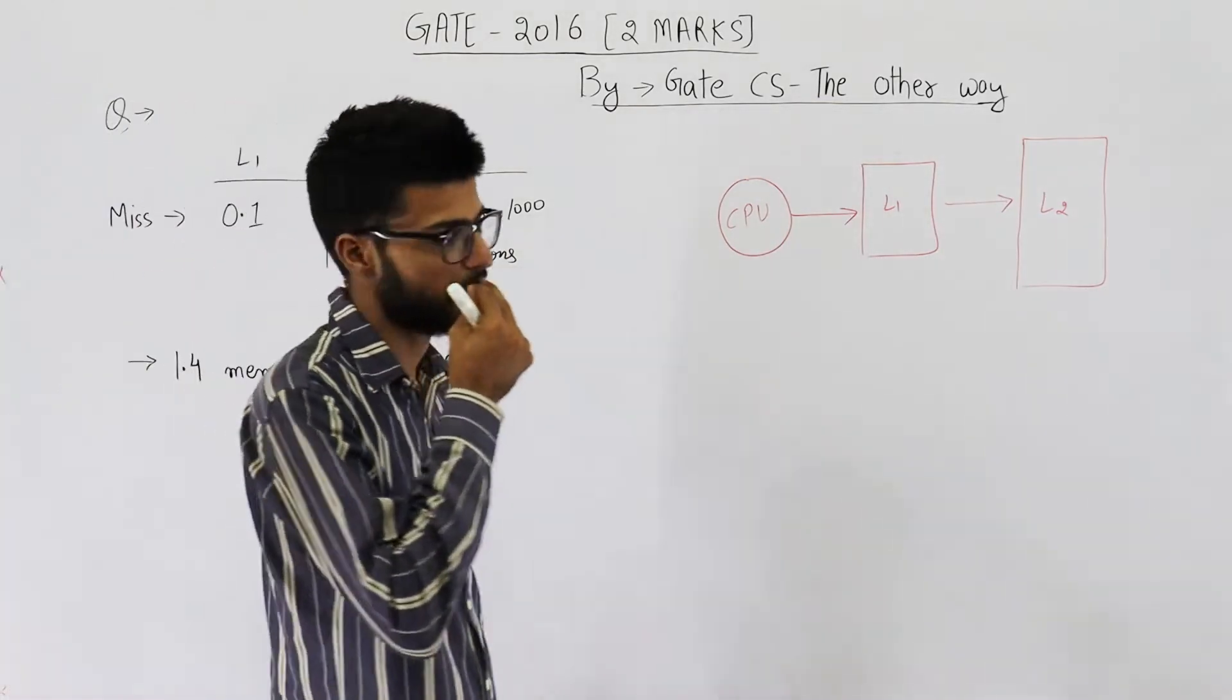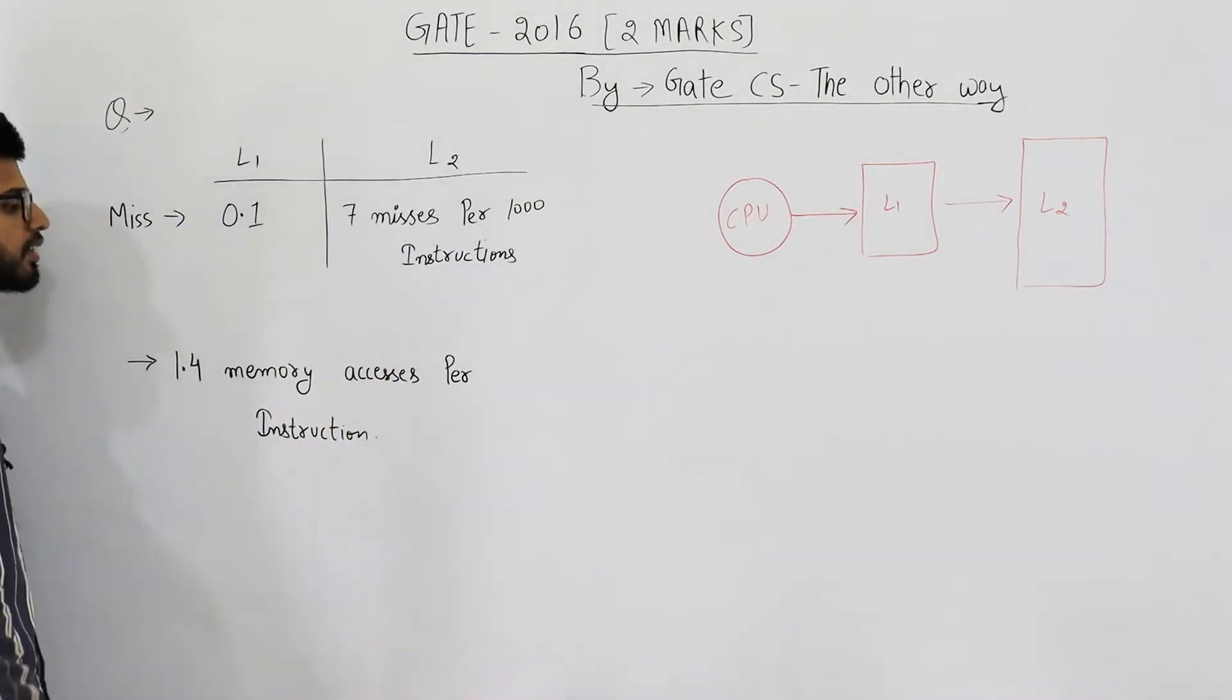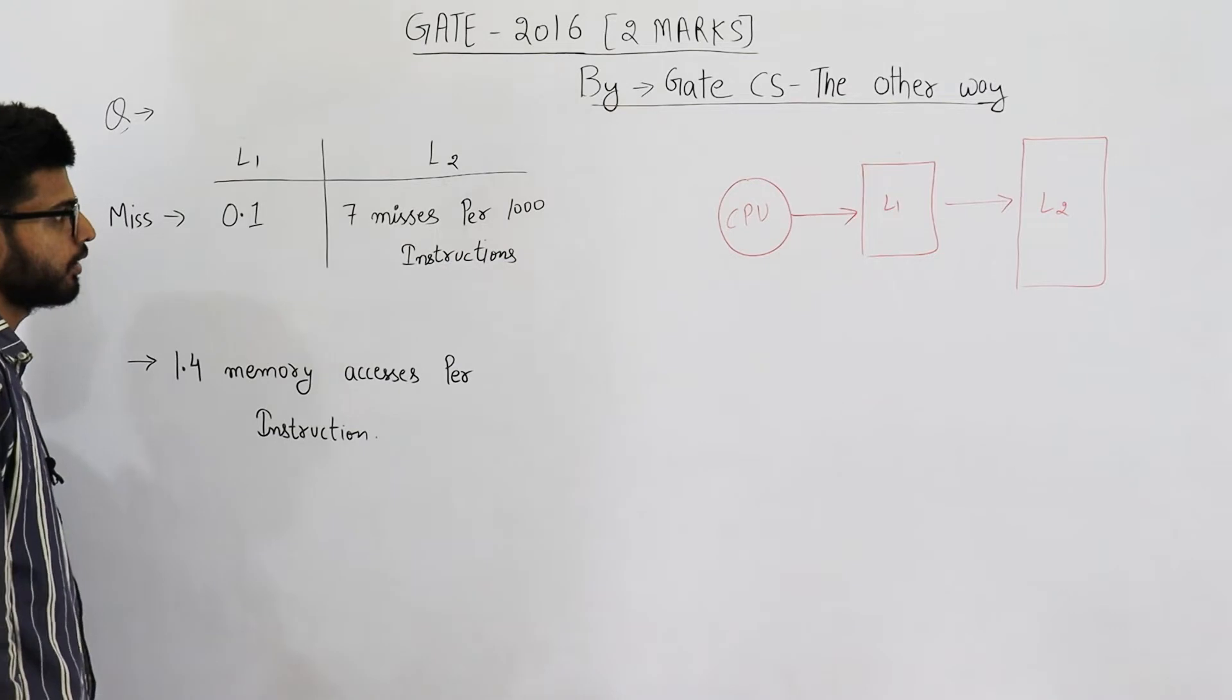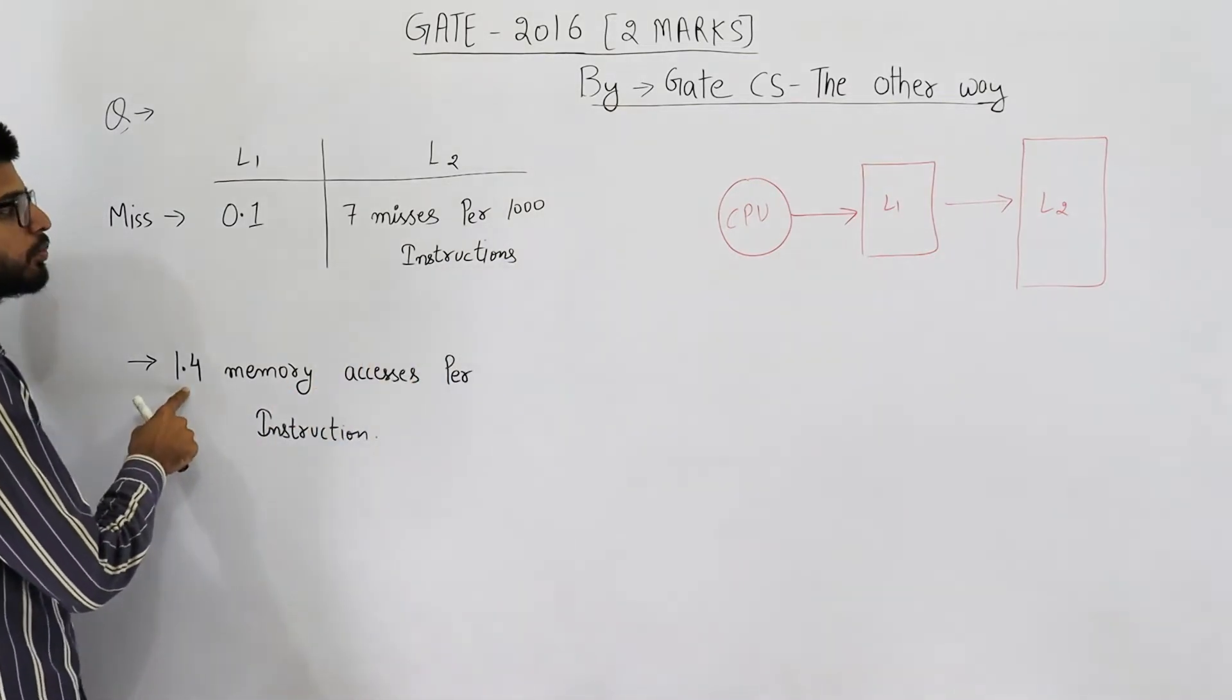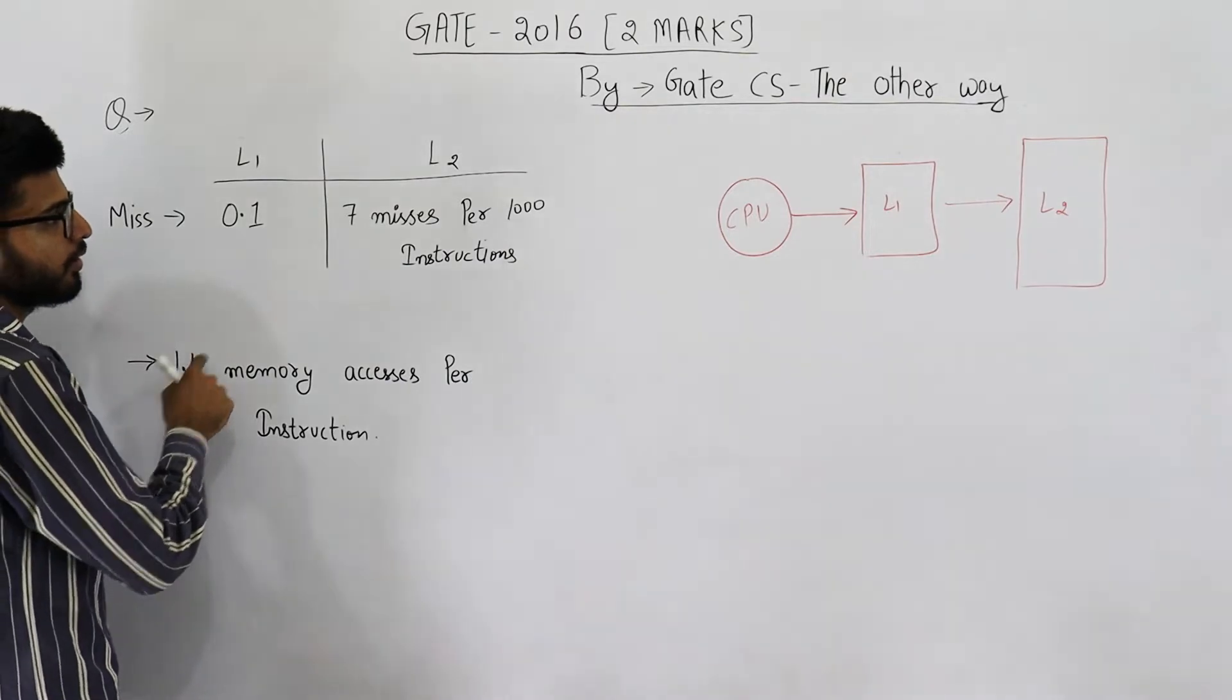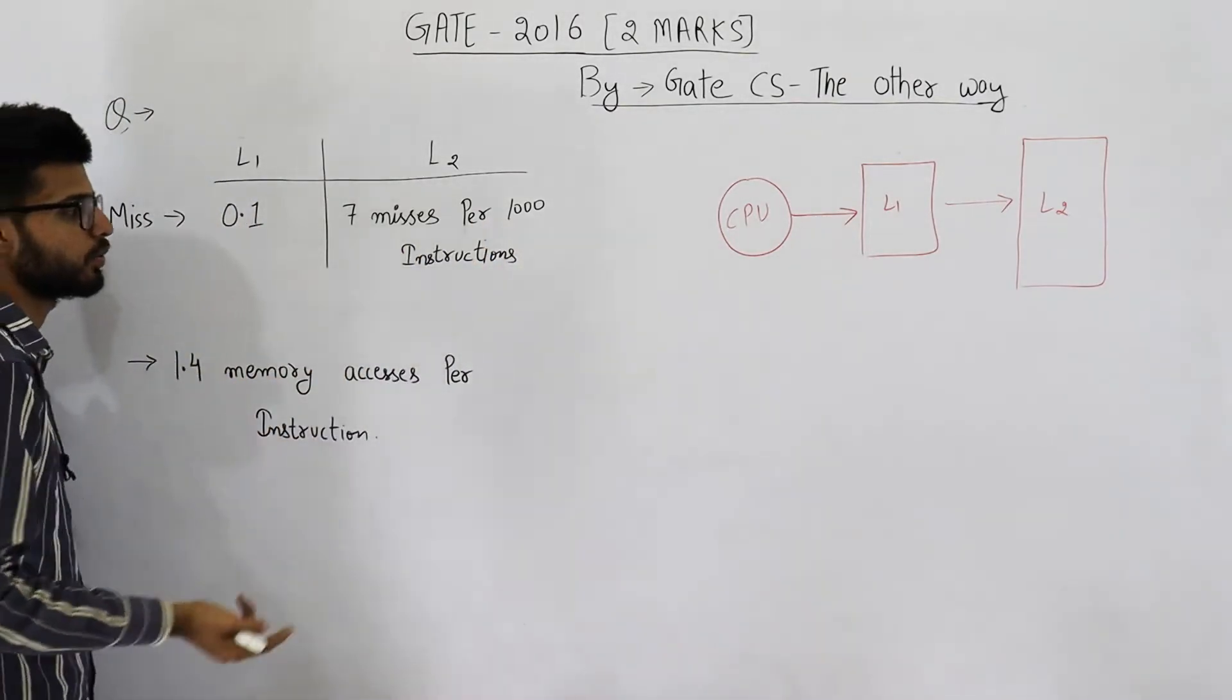Now one mistake that you might make is: they have given 1.4 memory accesses are required per instruction. You might think 1 instruction requires 1.4 memory accesses, so 1000 instructions will require 1400 memory accesses.